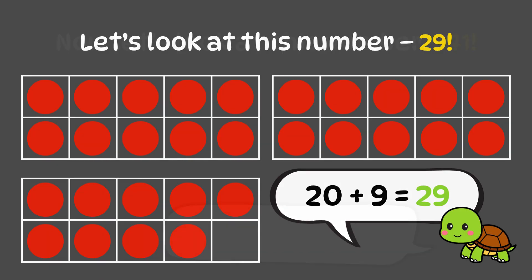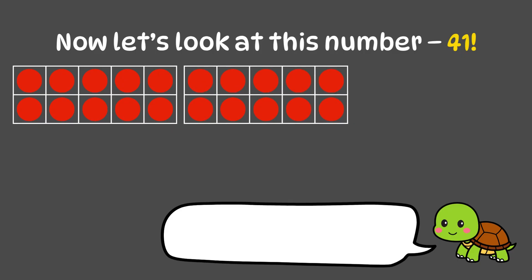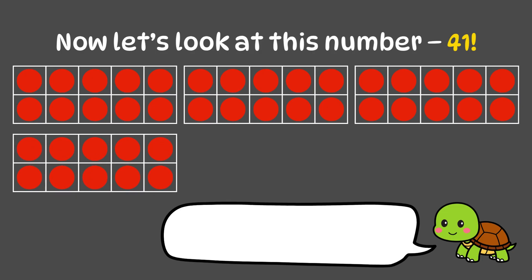Now, he wanted to try another one. He looked at the number forty-one. Let's start by making full frames first. He filled one frame, ten, another frame, twenty, then thirty, and forty. That's four full frames of tens.